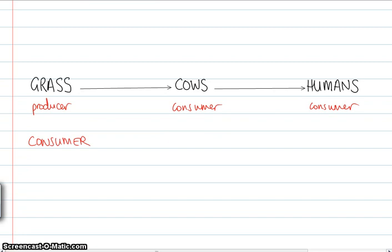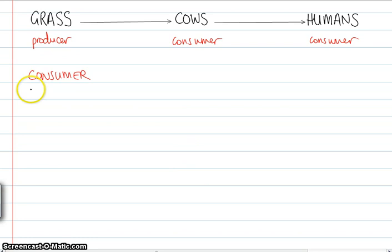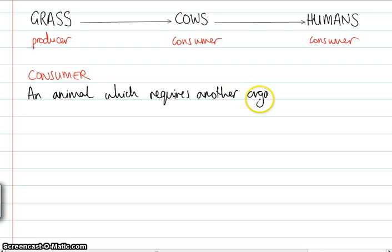So as we looked at before we have the grass is the producer, the cows are consumers and the humans are consumers. So the consumer is an animal which requires another organism for energy.